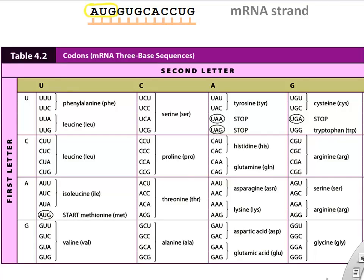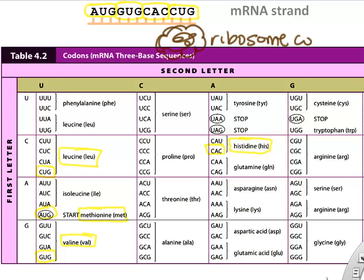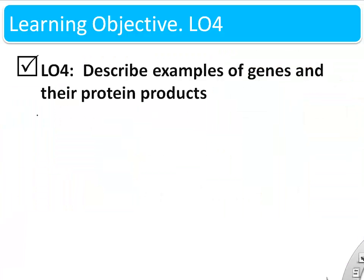You can do this as well because you have a table from your textbook. AUG tells the ribosome to go get methionine amino acid. GUG tells it to go get valine. CAC tells the ribosome to connect histidine while you're making your protein. And CUG in this example is leucine. The one you'll build in your workbook is going to be slightly longer but it uses the same rules.